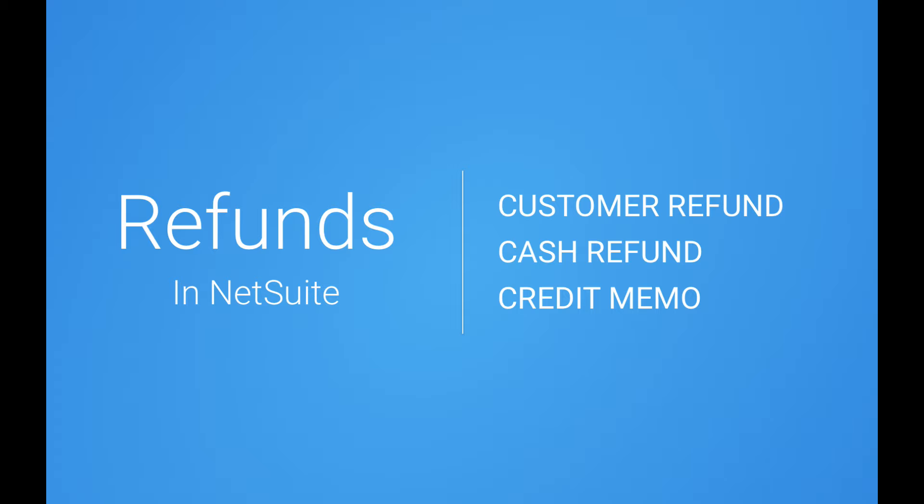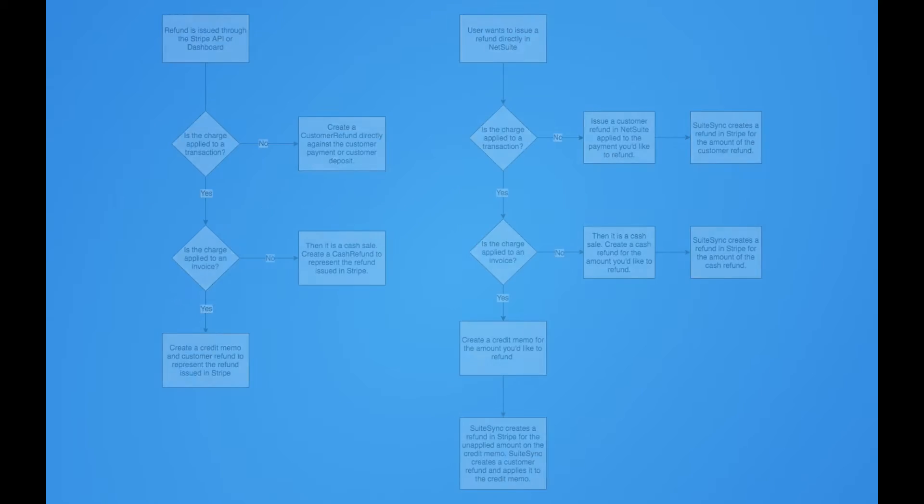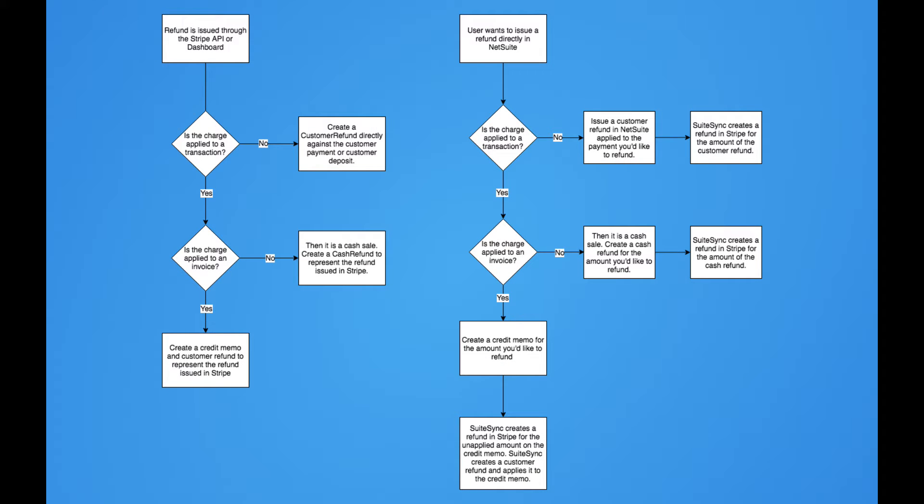What SuiteSync does is try to detect which combination of records you're using and allow you to either issue a refund through Stripe and let us create the correct records in NetSuite, or you can issue a refund in NetSuite and we'll push the corresponding correct refund amount to Stripe. I'll walk through a diagram here to give you an idea of how this works and then show you a couple of live examples.